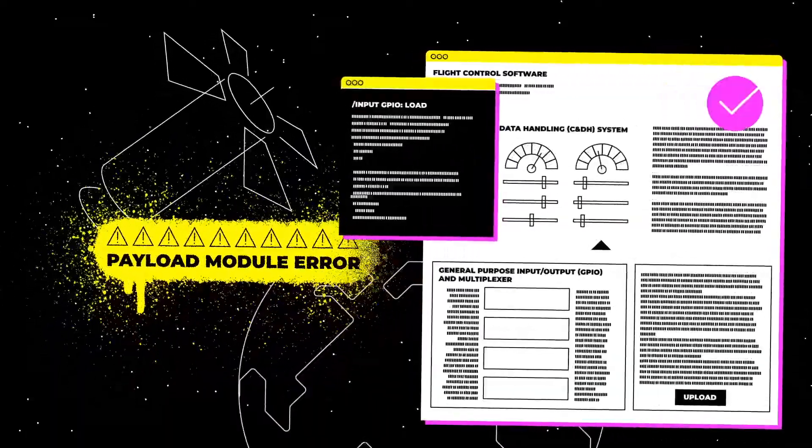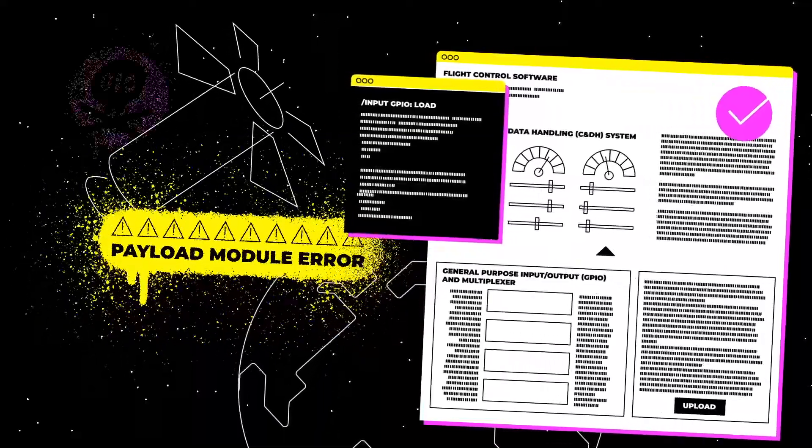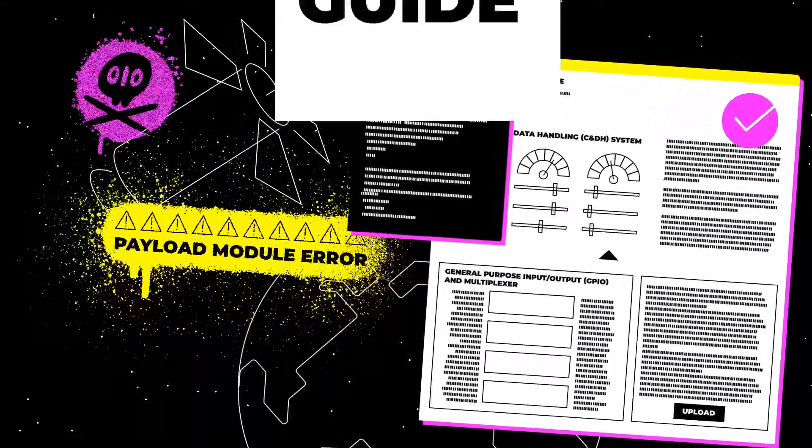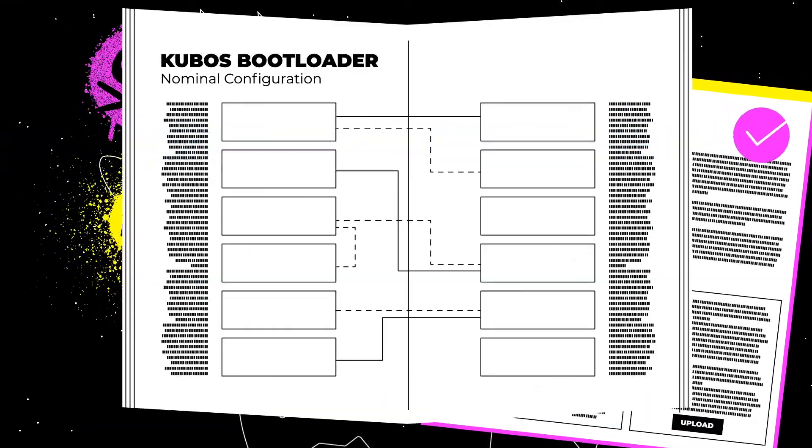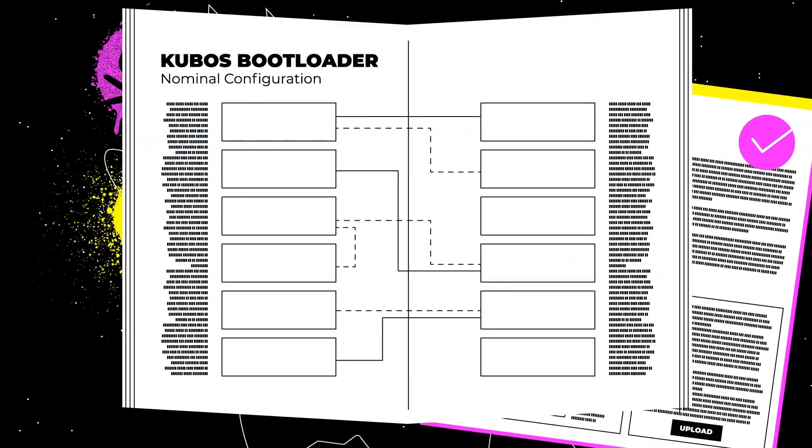Once the teams have access to the system console, they will identify that it has been corrupted. The teams will need to research nominal KUBOS bootloader configuration and repair the payload module's bootloader to resume proper operation of the payload module.